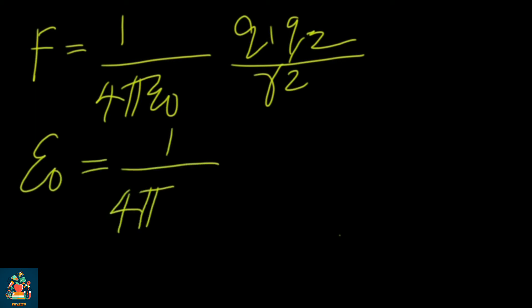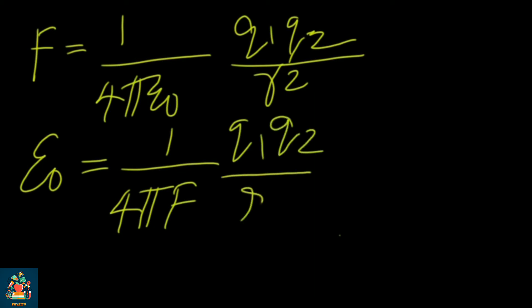Rearranging: epsilon zero is equal to 1 by 4 pi F, multiplied by q1 q2 divided by r square. Here, 1 by 4 pi is a constant, and from this expression we can determine the value of epsilon zero.